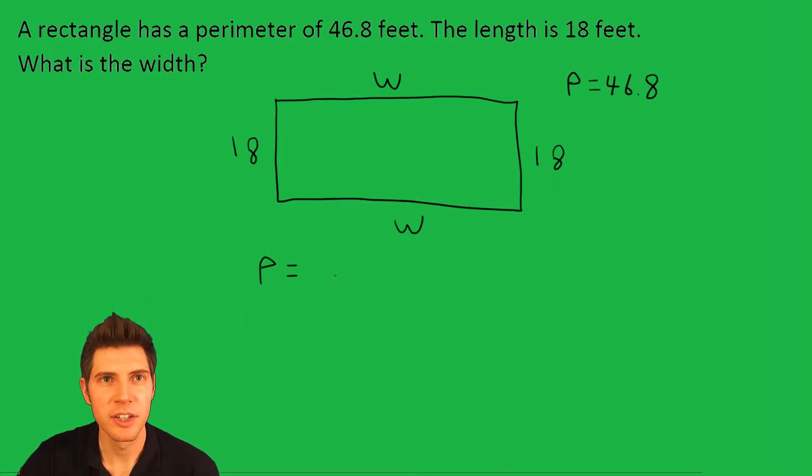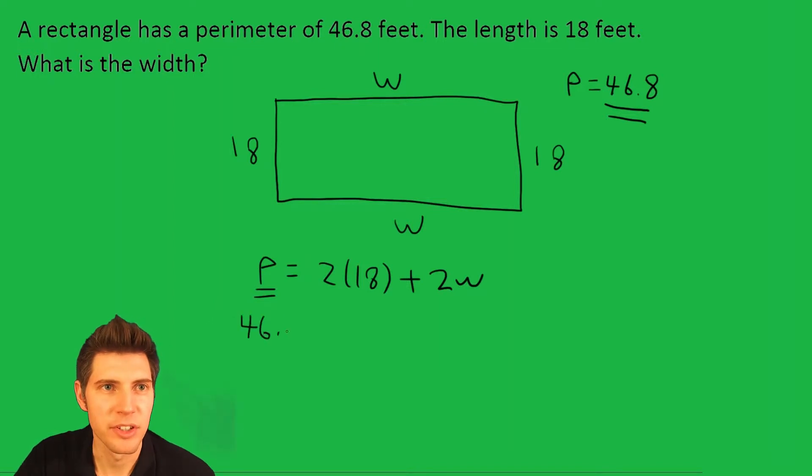So the perimeter is going to be equal to 2 times 18 plus the two w's. This is our formula for the perimeter. We can plug in 46.8 for the P because they gave us the perimeter. 46.8 equals 2 times 18 plus 2w.